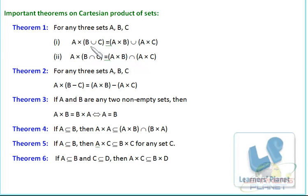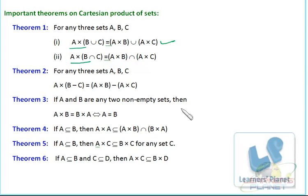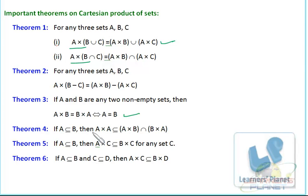Some important theorems: A cross (B union C) equals (A cross B) union (A cross C). A cross (B intersection C) equals (A cross B) intersection (A cross C). A cross (B minus C) equals (A cross B) minus (A cross C). If A and B are non-empty, A cross B equals B cross A only when A equals B. If A is a subset of B, then A cross A is a subset of (A cross B) intersection (B cross A). If A is a subset of B, then A cross C is a subset of B cross C for any set C.